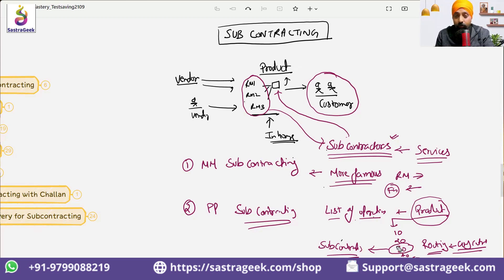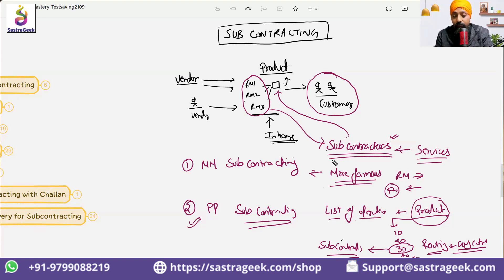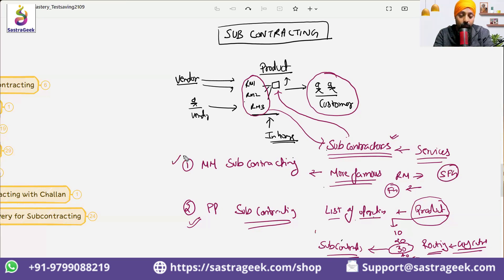PP subcontracting will not be discussed in today's session in detail — there is a specific PP session for that. In MM subcontracting, the full product — whether FG or SFG — can be subcontracted. MM subcontracting gives better visibility of what product we are getting and what product we are dispatching. That's why it is a more common approach. You can plan how much material you want to send for subcontracting and what material you will be receiving back.